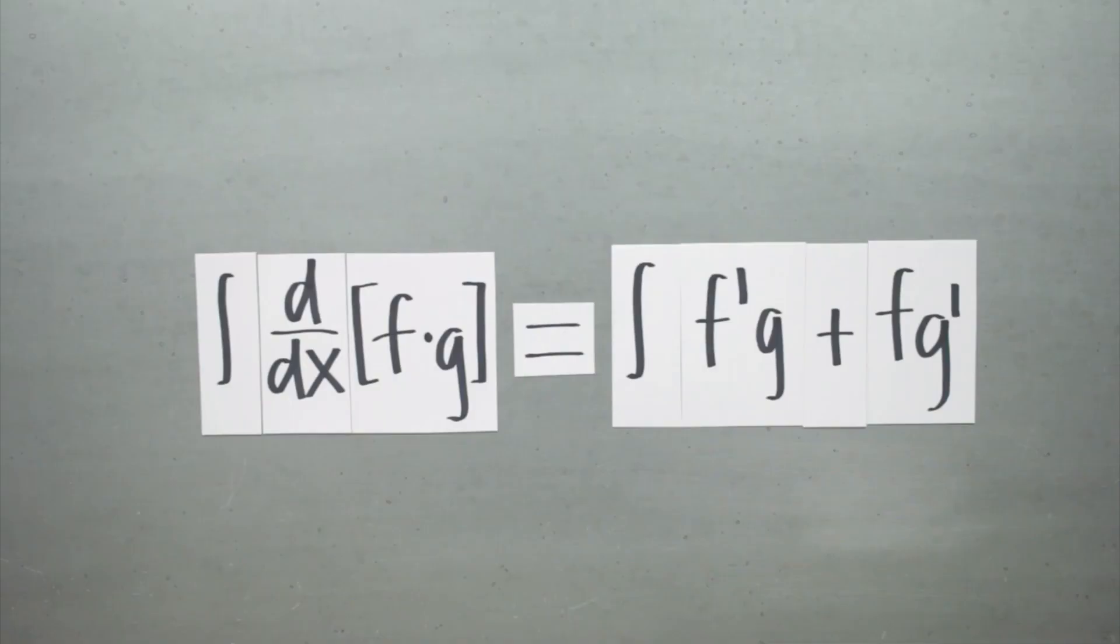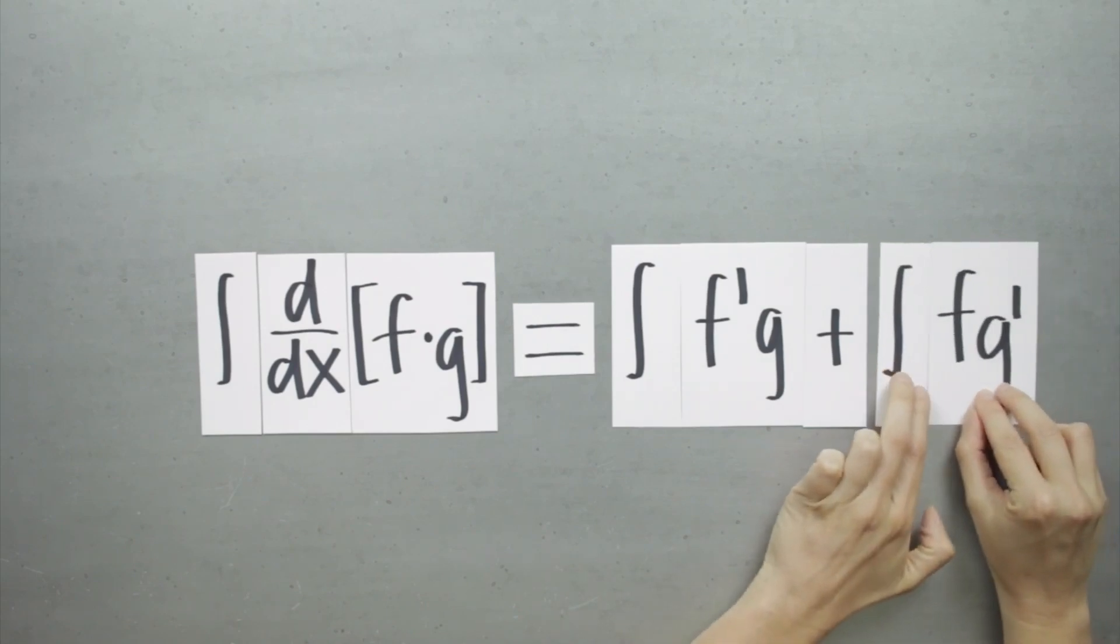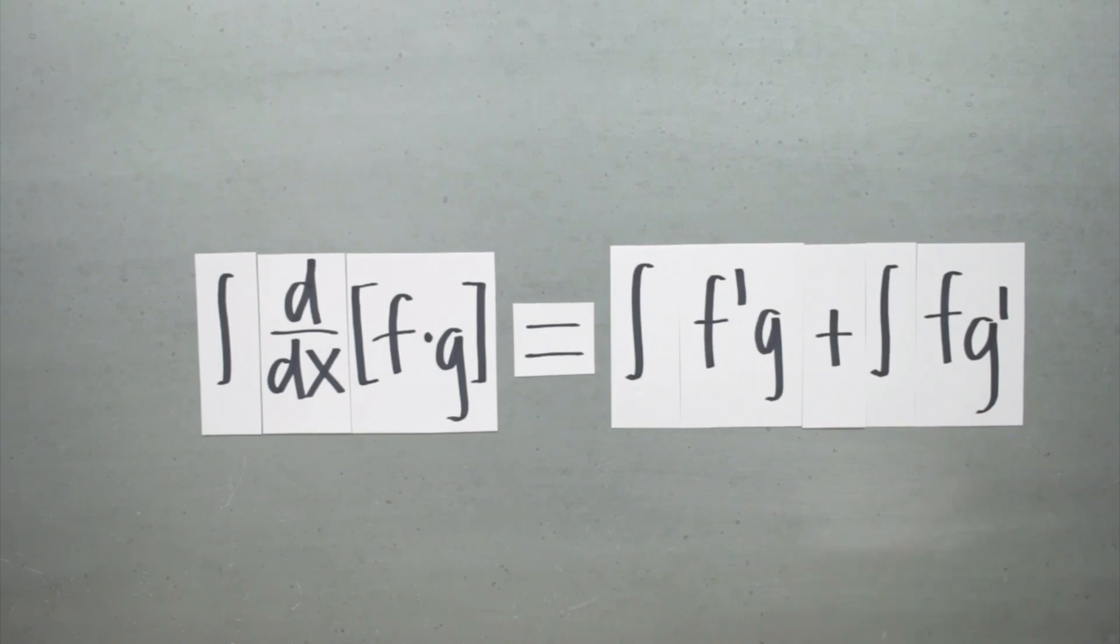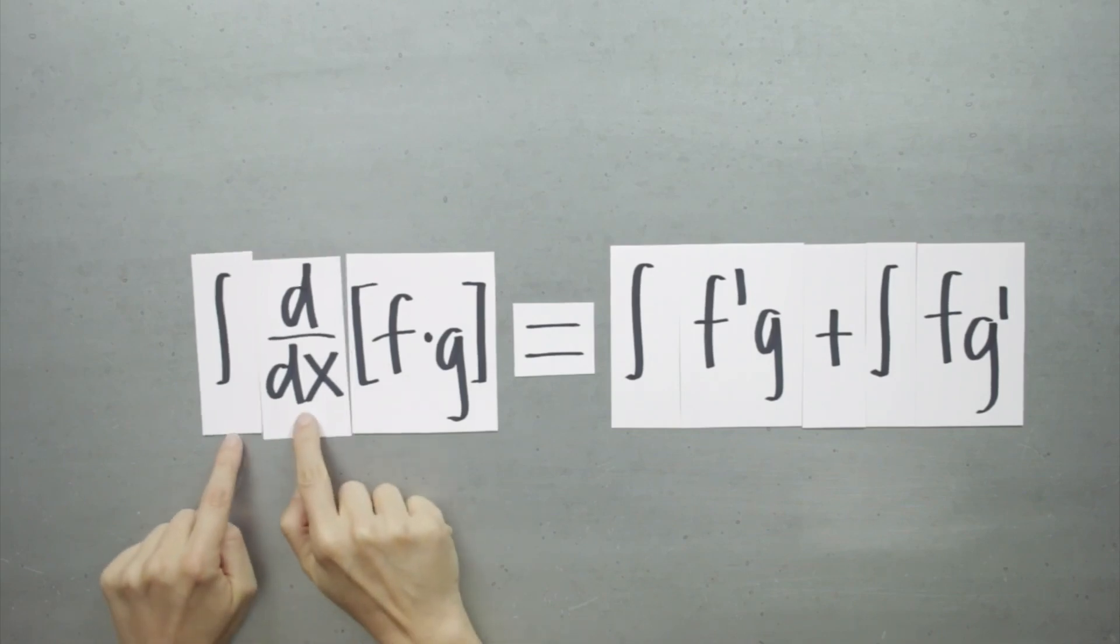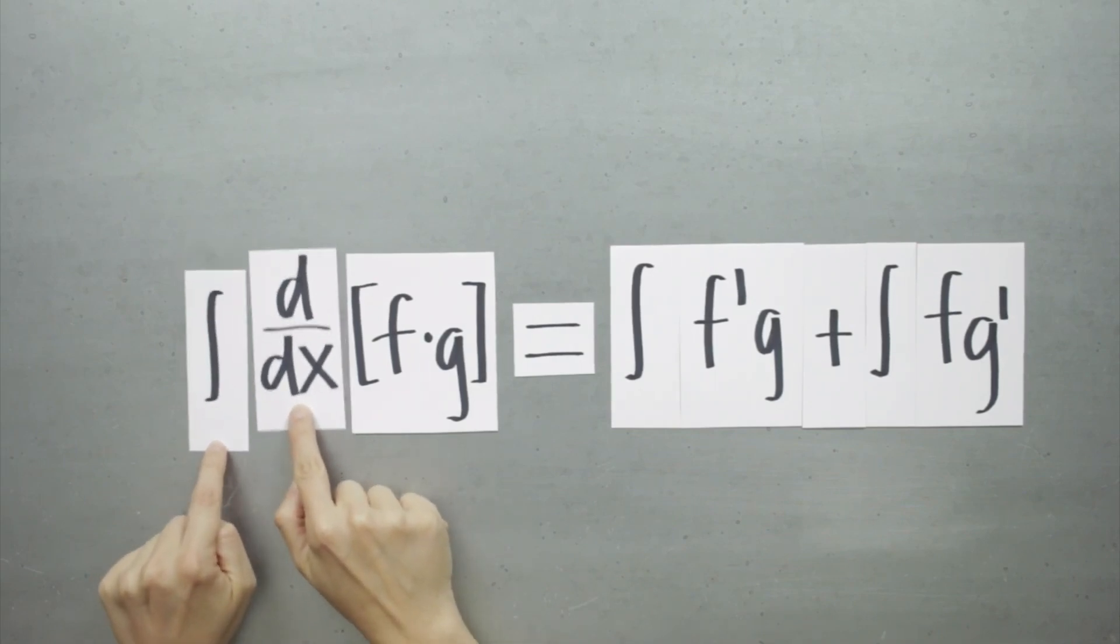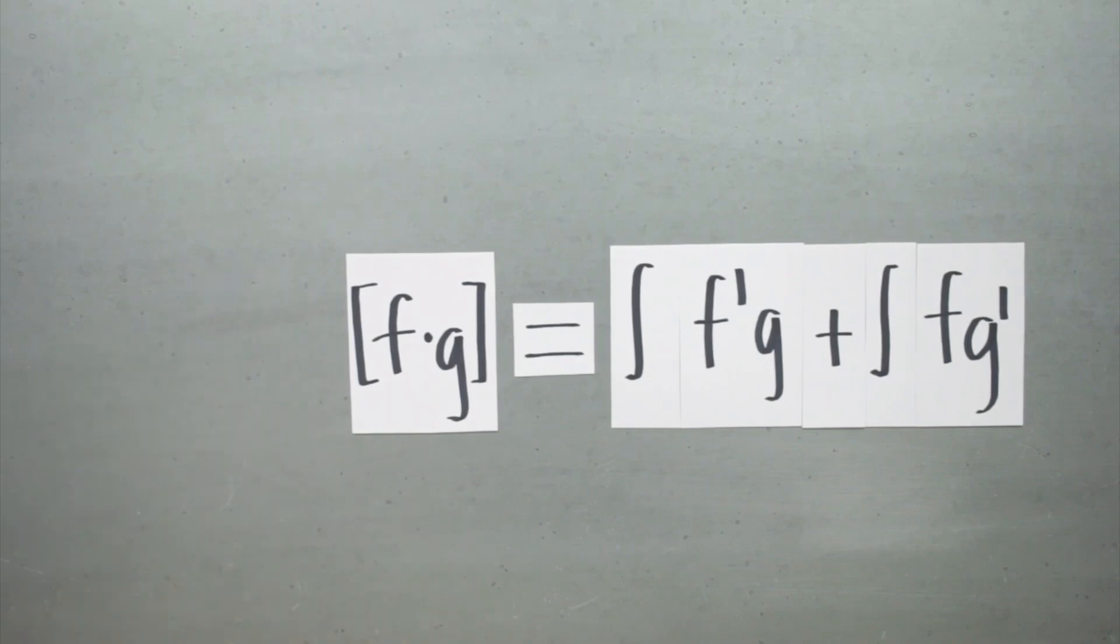But because we're making the same change to both sides, we're not actually changing the value of the equation. Whenever we integrate the sum of two terms, we can split the integral in two and integrate each term separately. So that's what we'll do to the right side. Over here on the left, because integration and differentiation are inverse operations that undo each other, the integral and derivative cancel each other out.